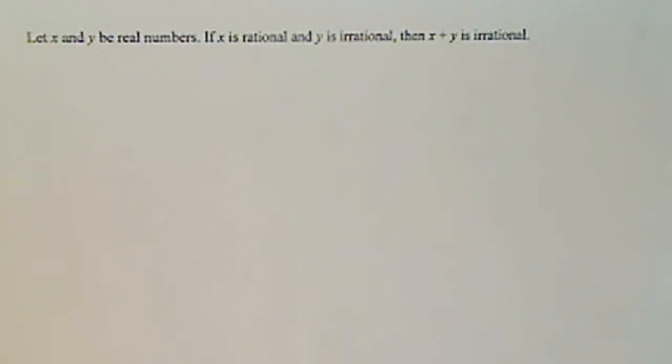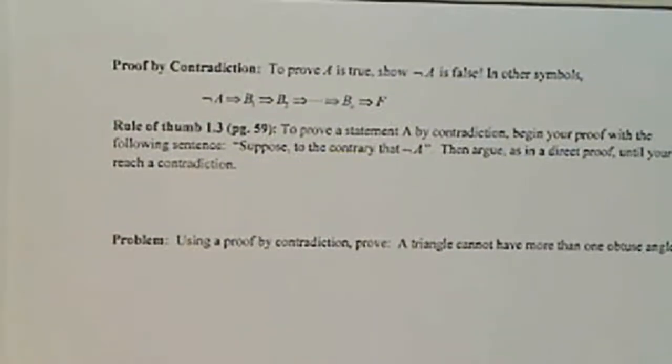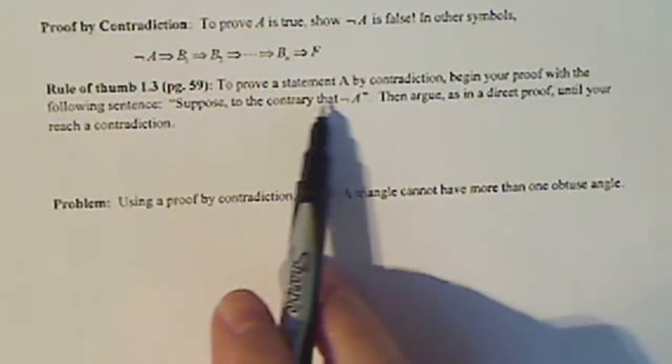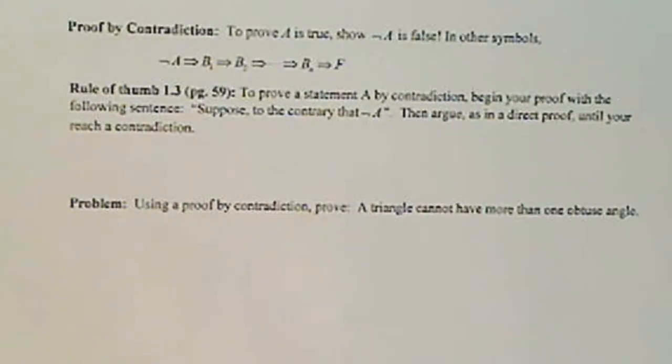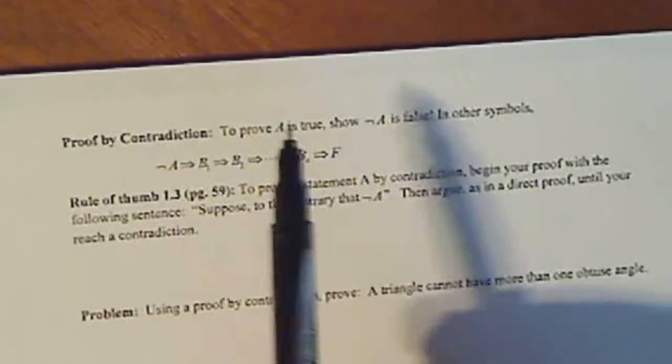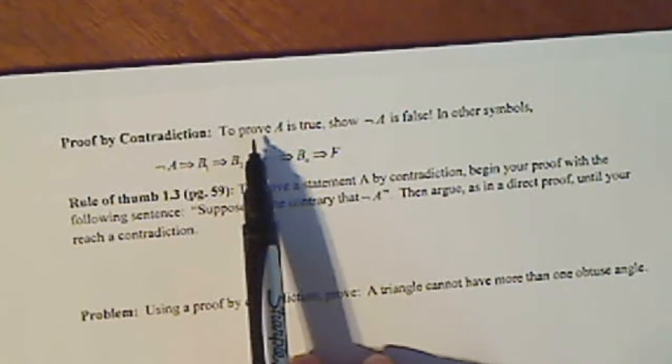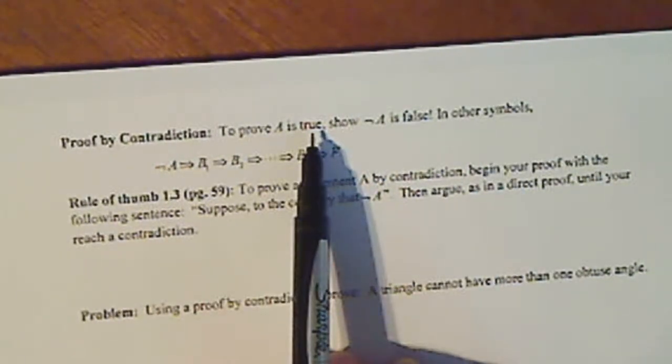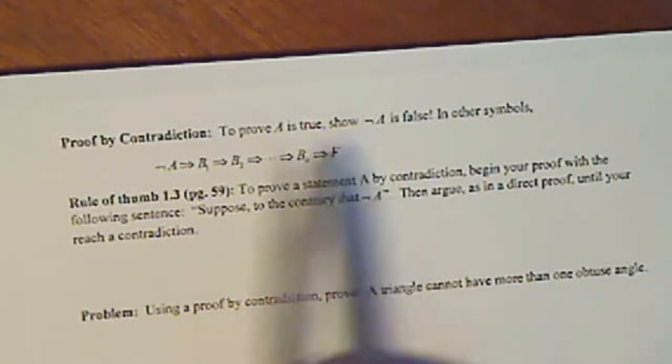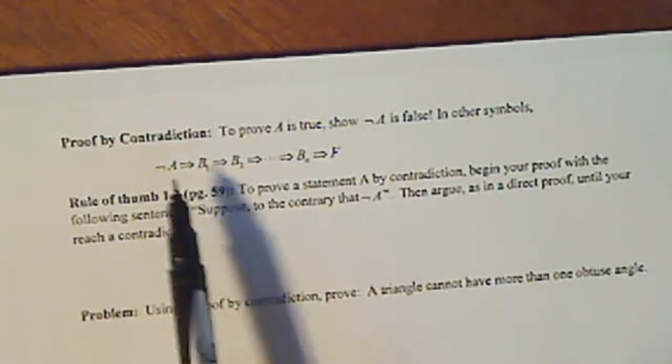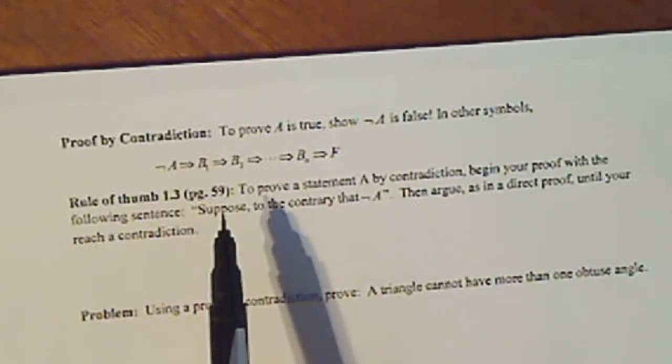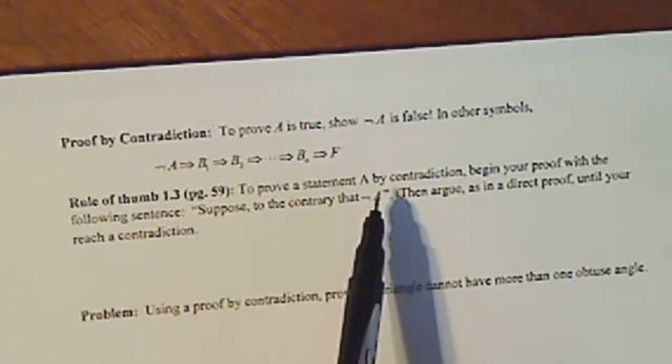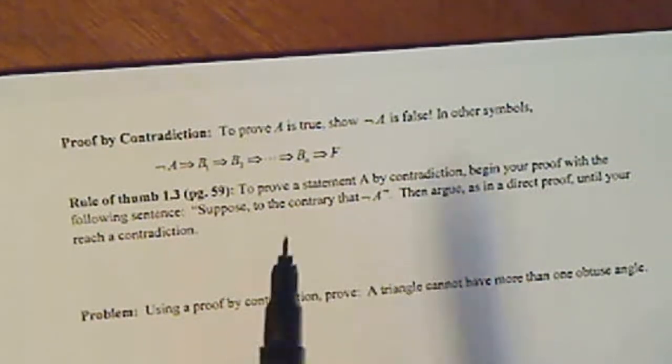Now the rules by contradiction, a good rule of thumb from our textbook. It says to prove a statement A by contradiction, begin your proof with the following sentence: suppose to the contrary that not A. So if you're trying to prove A is true, you start with the idea that not A, and through direct proof you prove not A is false.